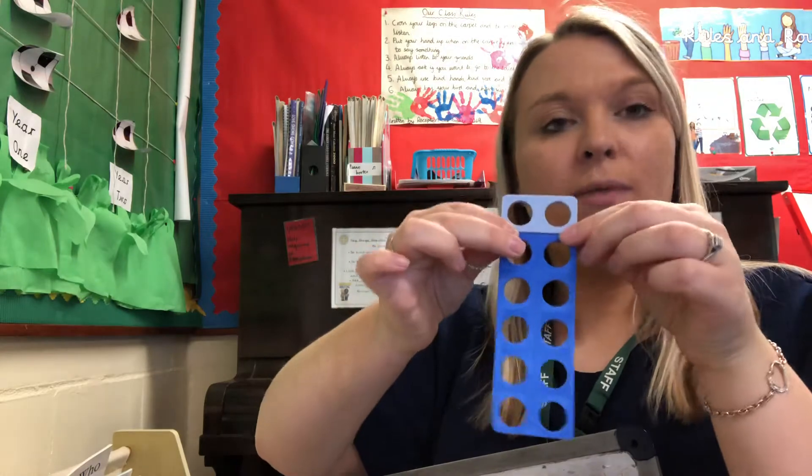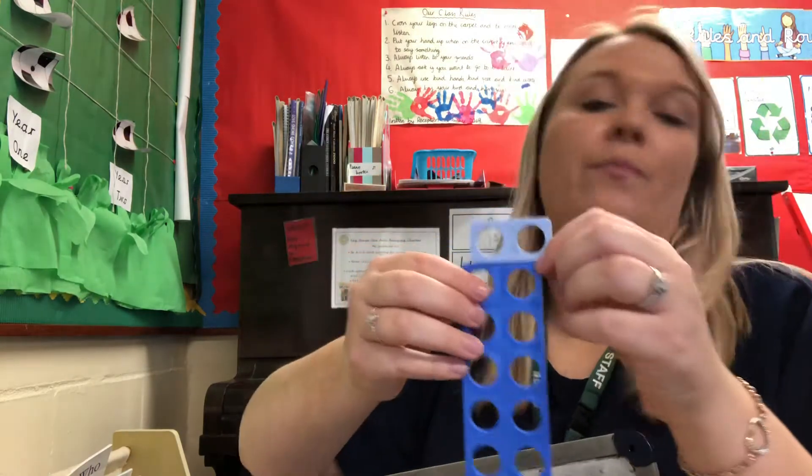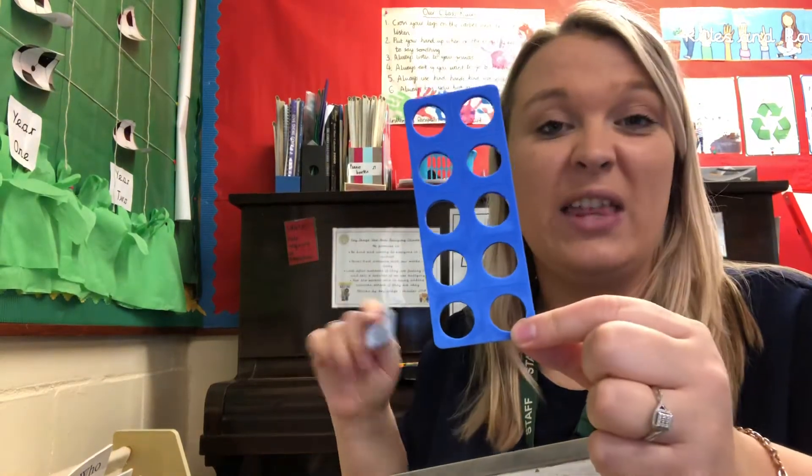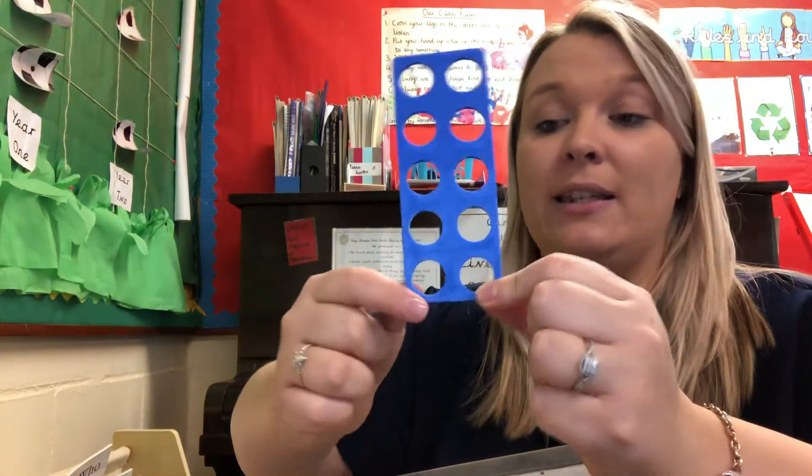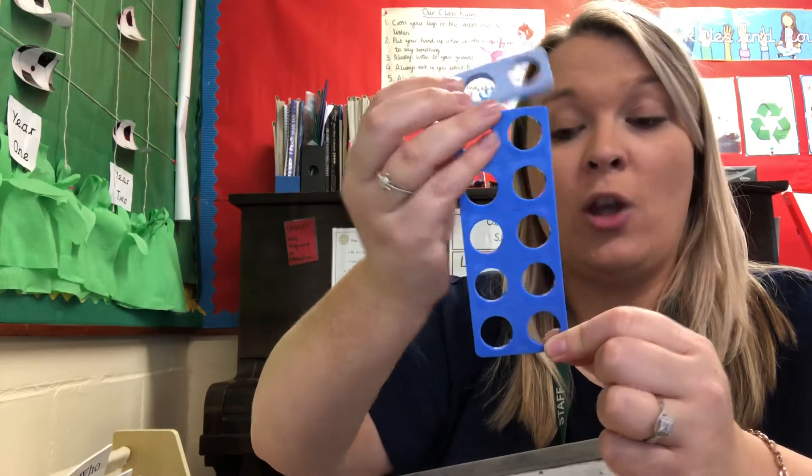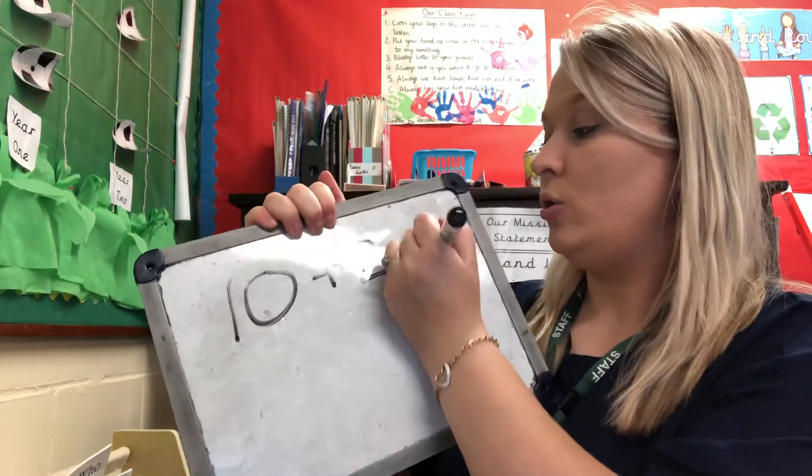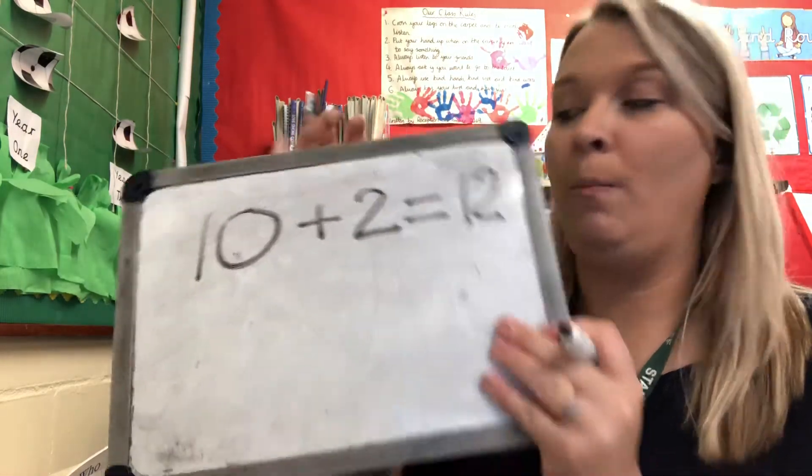If you don't, what we're going to do? We can count them. Now, I'm not going to start counting from down here because I know that this is 10. So, I already know what the biggest number in the number sentences is. It's 10. So, we've got 10, 11, 12. So, we've got 10 add two. 10 add two equals 12. Well done. So, that's a way that we can work that out using the Numicon.